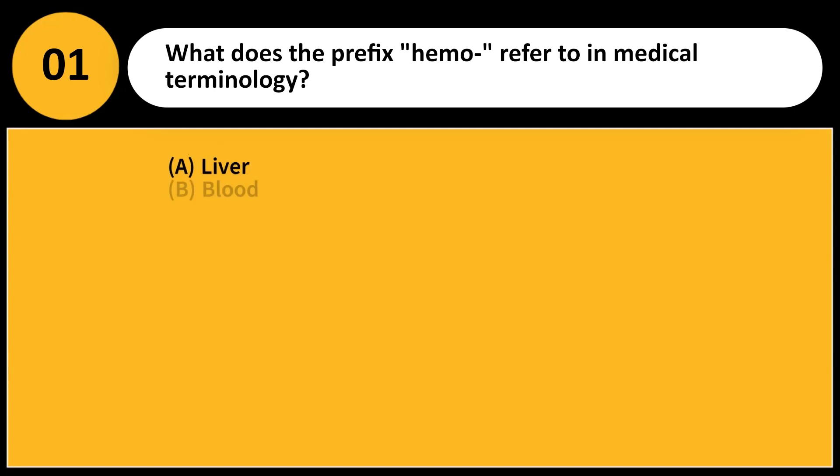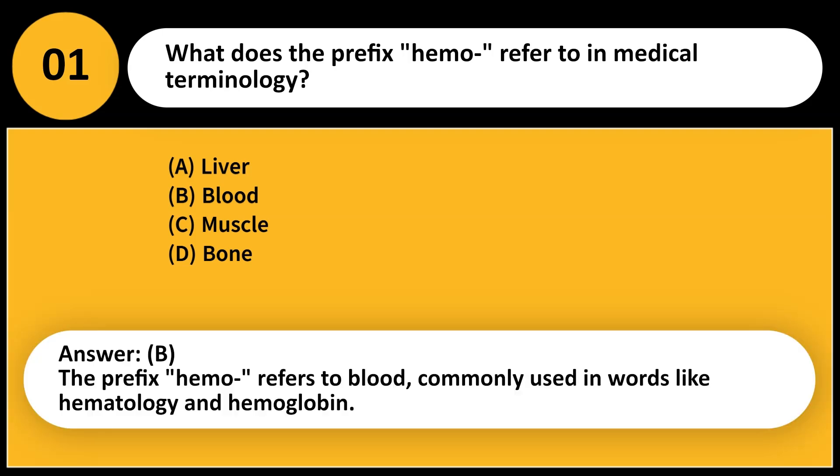What does the prefix hema- refer to in medical terminology? A. Liver B. Blood C. Muscle D. Bone. Answer: B. The prefix hema- refers to blood, commonly used in words like hematology and hemoglobin.